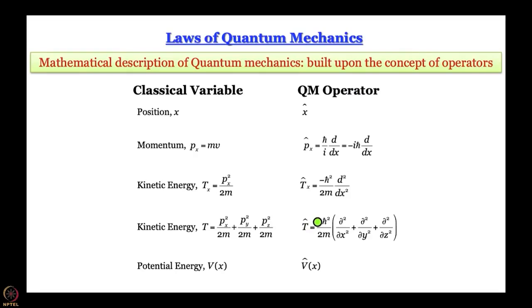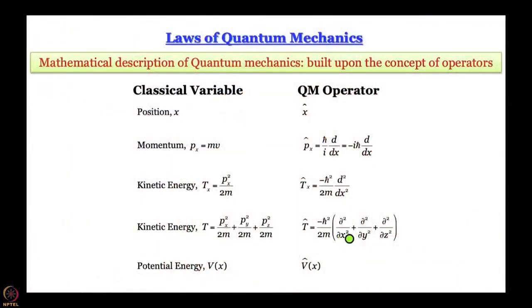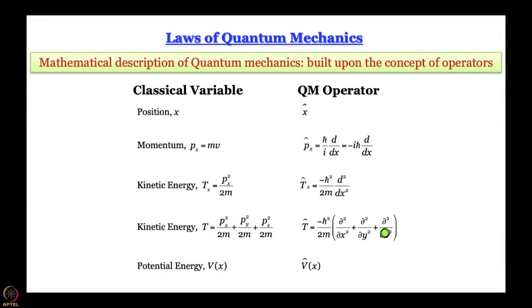We have already encountered the total energy operator, the Hamiltonian, which is V(x,y,z) + (−ℏ²/2m)(∂²/∂x² + ∂²/∂y² + ∂²/∂z²) in three dimensions, or simply −ℏ²/2m · d²/dx² in one dimension. The kinetic energy operator is −ℏ²/2m · d²/dx² in one dimension. Since kinetic energy equals pₓ²/2m in classical mechanics, the kinetic energy operator must arise from applying the momentum operator pₓ twice and dividing by 2m.